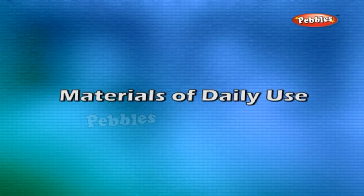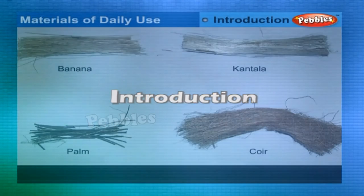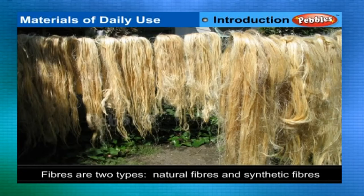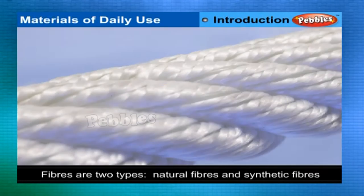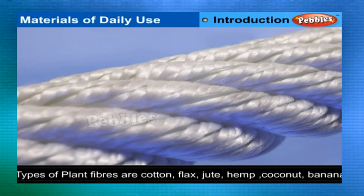Materials of daily use: introduction. A fiber is a kind of thread which is strong and flexible enough to make clothes, nets, ropes, etc. Fibers are of two types: natural fibers and man-made fibers, also called synthetic fibers.